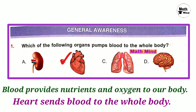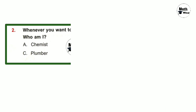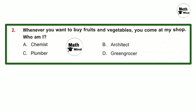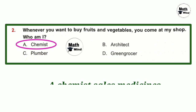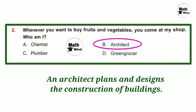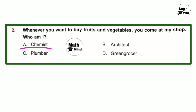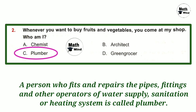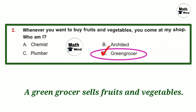Question number 2: Whenever you want to buy fruits and vegetables, you come to my shop. Who am I? Option A — chemist: a chemist sells medicine. Option B — architect: plans and designs building construction. Option C — plumber: fits and repairs pipes, fittings, and water supply systems. Option D — greengrocer: sells fruits and vegetables. So option D is correct.